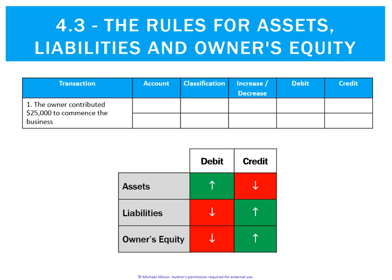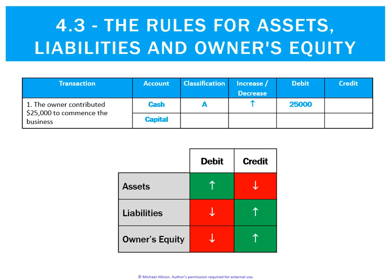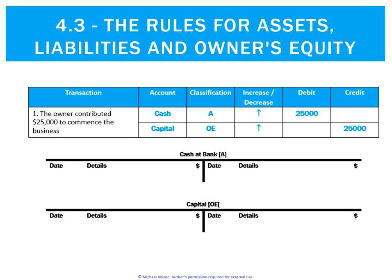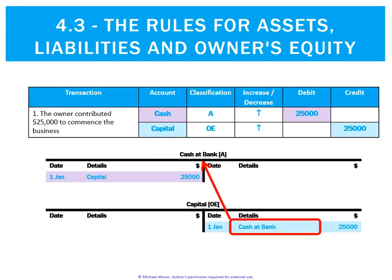Let's learn by processing some transactions. The owner contributed $25,000 to commence the business. Cash is an asset and it's increasing, so the rules state that assets increase on the debit side. Capital is an owners equity account and it's also increasing, and owners equity increases on the credit side. Debits match credits. Posting to the ledgers, we do a debit to cash and a credit to capital. The reference in cash at bank will be 'capital', and in the capital ledger we write 'cash at bank' to find the matching entry.